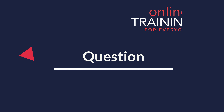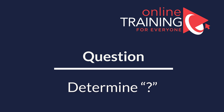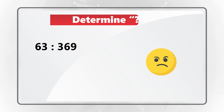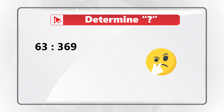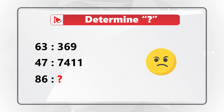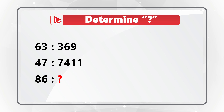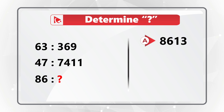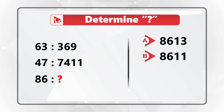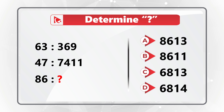Here is a very interesting question to test your analytical skills. You're presented with three ratios: 63 to 369, 47 to 7411, and then a third ratio where 86 is related to a question mark. The four choices are: Choice A: 8613, Choice B: 8611, Choice C: 6813, and Choice D: 6814.